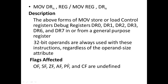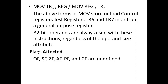The MOV instruction forms that store or load test registers TR6 and TR7 move data into or from general-purpose registers. These instructions load the test registers into the general-purpose registers or extract them from the general-purpose registers. A 32-bit operand is always used regardless of the operand size attribute. The flags affected are: overflow flag, sign flag, zero flag, auxiliary carry flag, parity flag, and carry flag.